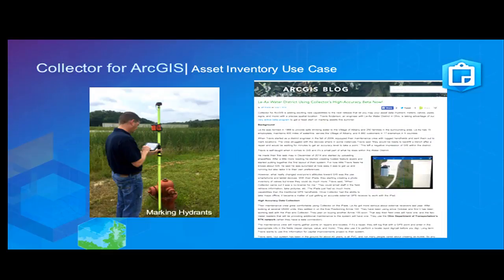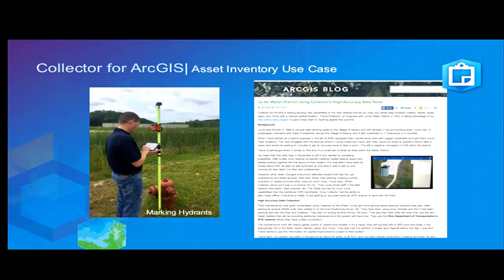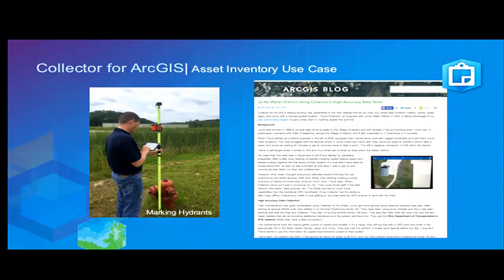Here's a story we put together in a blog article a couple of weeks ago. Travis Anderson from LEAC's water district has his iPad mounted to a pole, using an EOS Aero GNSS receiver with an antenna on top, connected to the Ohio DOT's RTK network. He's marking hydrant locations within two centimeters. That's something you can now do with Collector — we have it in beta and will show that demo at the very end.